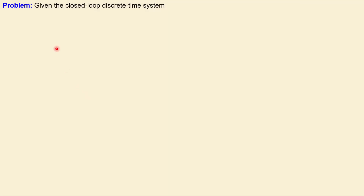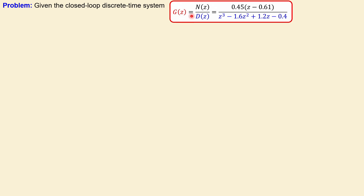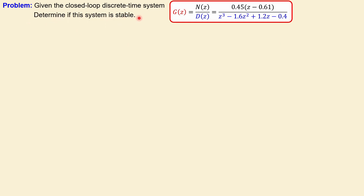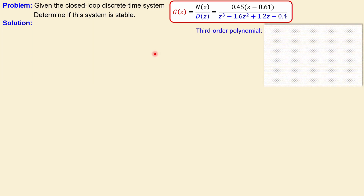Let's look at the problem. We have the following closed-loop discrete time system given. You can see G(z) — it is in the z-domain, so it is a discrete time system. We have the numerator N over the denominator D. This is the transfer function of the system, converted from the s-domain to the z-domain by z-transform. We can see it's a third-order system with one zero and a third-order polynomial, and we would like to know if this system is stable. We will use the Jury stability test for that.